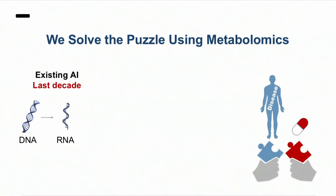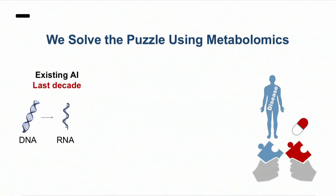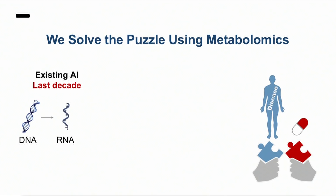In the last decade, because of the availability of genomic data and compute power, AI platforms have been developed to solve this puzzle using genomic data. But genomics alone is not enough. DNA and RNA is really far from what we observe in disease symptoms.